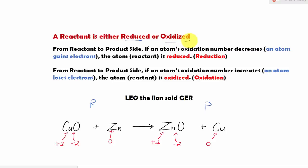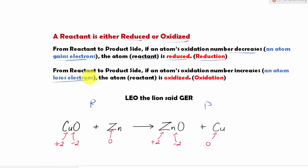So how does that work? From reactant to the product side, if an atom's oxidation number decreases, the only way that is possible is because it is gaining the negative electron to cancel that positive — so that atom is considered reduced through the reduction process. Vice versa, if an atom's oxidation number increases going from reactant to product, the only way that is possible is because it is losing the negative electrons to become more positive, so that reactant atom is considered oxidized through the oxidation process. If you have a hard time, always think about LEO the lion says GER: LEO — lose electrons, oxidation; GER — gain electrons, reduction.